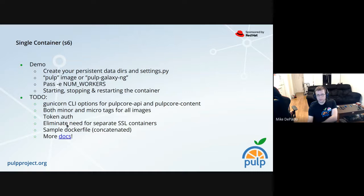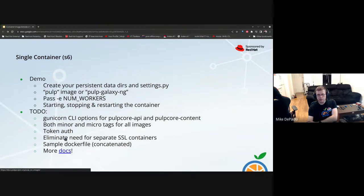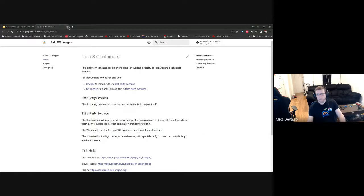Instead of having a separate SSL container image like 'latest-ssl' or '3.20.1-ssl', we want to add an option like -e SSL to do SSL mode. Many users have requested a sample Dockerfile so they can build it in their own environments. We currently have three layers of container files that produce the pulp/pulp image. Finally, we have a new documentation website but it's incomplete, so we'll be adding to it.